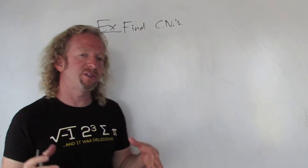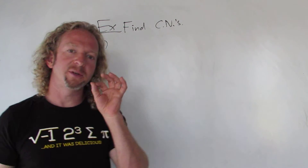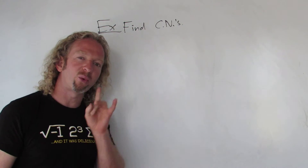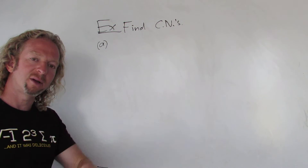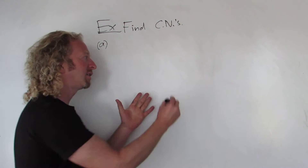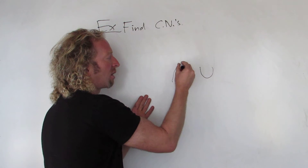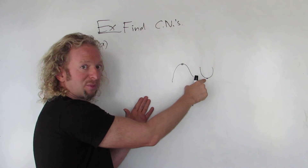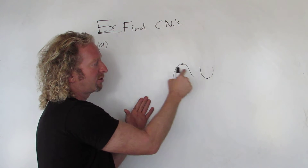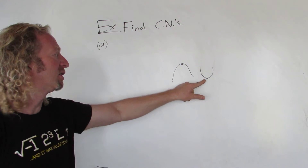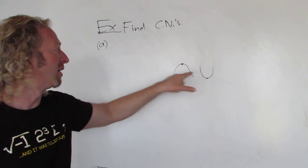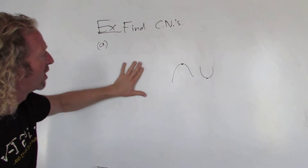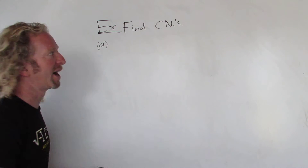What are critical numbers for? There's a big result in mathematics: if you have a relative maximum or minimum, you have a critical number. Relative maximums and minimums are y-values that are bigger than or smaller than the points around them. So if you have one of those, you have a critical number.